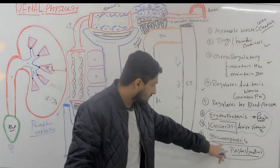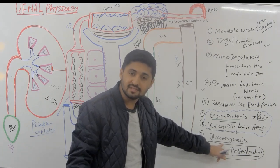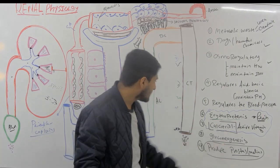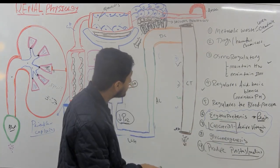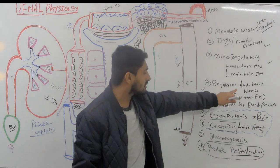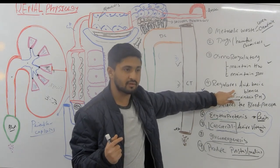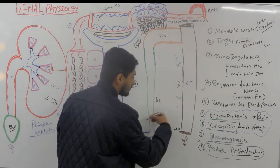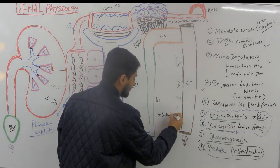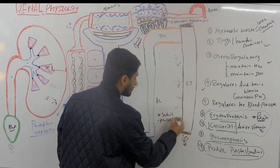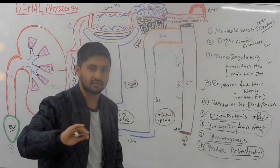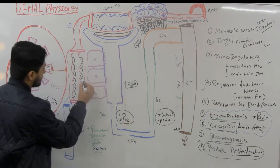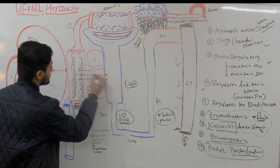Kidneys also perform gluconeogenesis — making glucose from non-carbohydrate sources. The kidney also excretes sulfuric acid and phosphoric acid from protein digestion. A lot of that excretion happens from the peritubular capillaries, while reabsorption also occurs simultaneously.